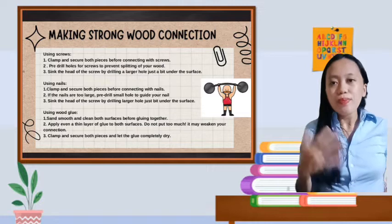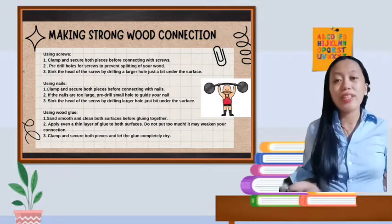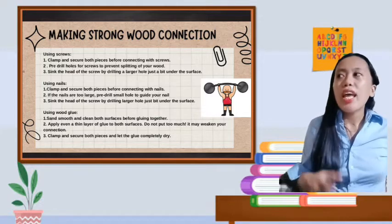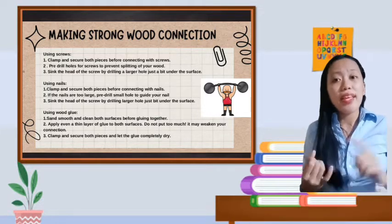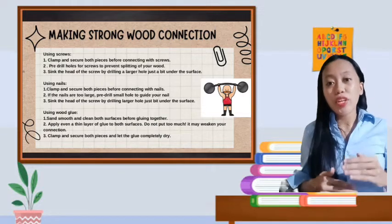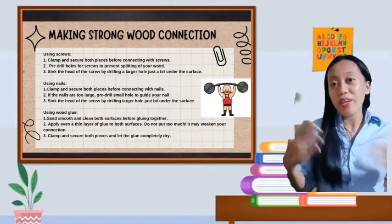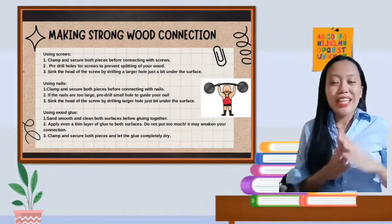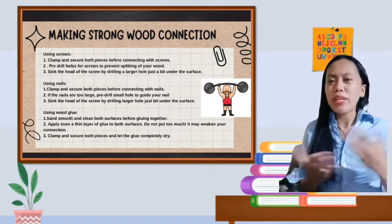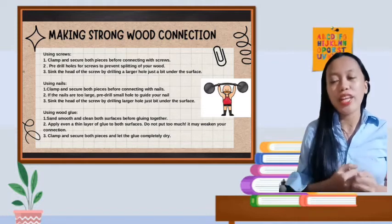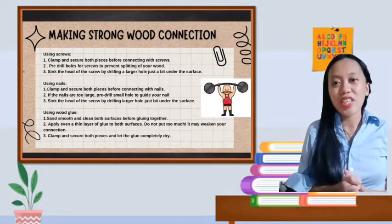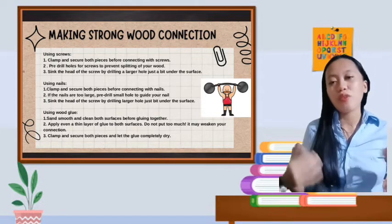Number two is sink. Sink the head of the screw by drilling a larger hole just a bit under the surface. And we can also reconnect using nails. Number one, clamp and secure both pieces before connecting with nails. Of course with nails, we can connect them better. Number two, if the nails are too large, pre-drill small holes to guide your nail. And number three, sink the head of the screw by drilling a larger hole just a bit under the surface.